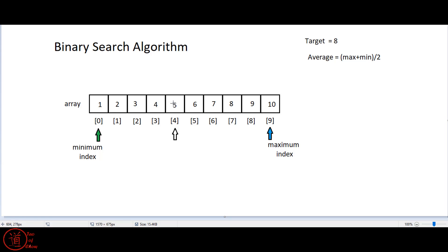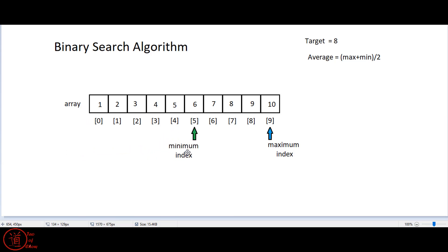Because our target is greater than this element, we can narrow down the search area — the minimum can move up. I like to move it one past the midpoint so I don't have to search that element again, since I've already checked it. Then we repeat and look in the middle again. The average is (max 9 + min 4) = 13 / 2 = 6.5, which as an integer becomes 6.